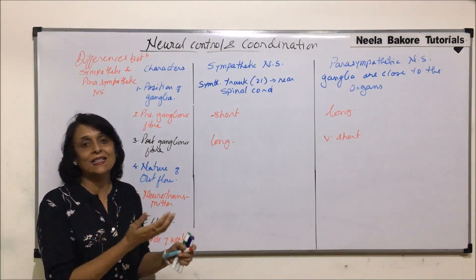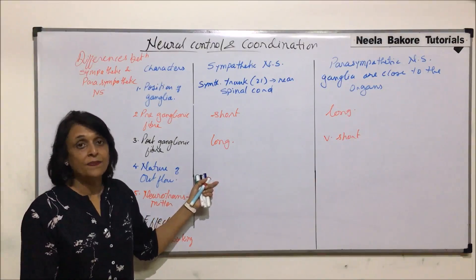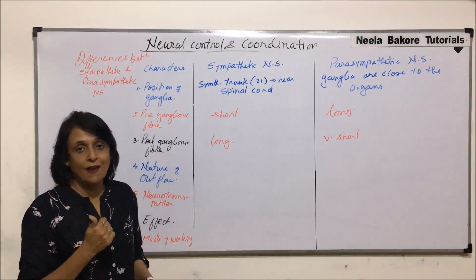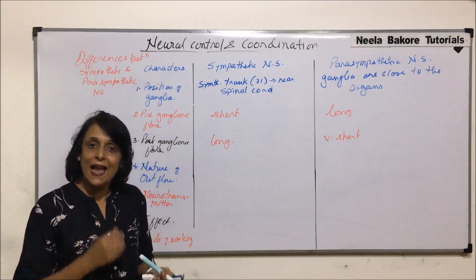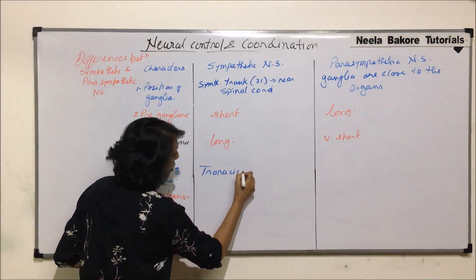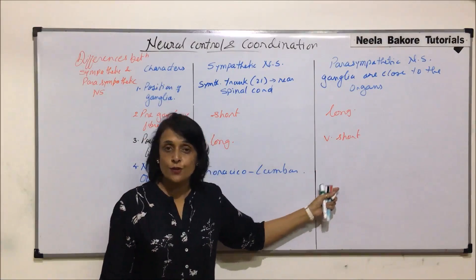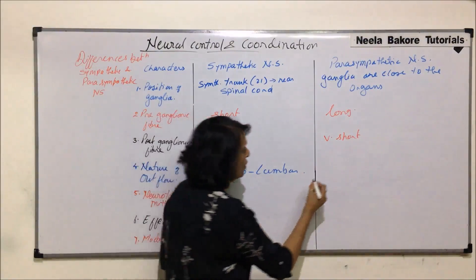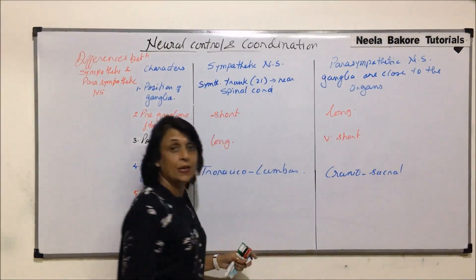The next point is nature of outflow — that means from which part of the CNS these fibers originate. In the sympathetic nervous system, the 21 ganglia arise mostly from the thoracic and lumbar region, so we call the outflow thoracolumbar. In the parasympathetic nervous system, fibers arise from some of the cranial nerves and from the sacral spinal cord, so the origin or outflow is termed craniosacral outflow.